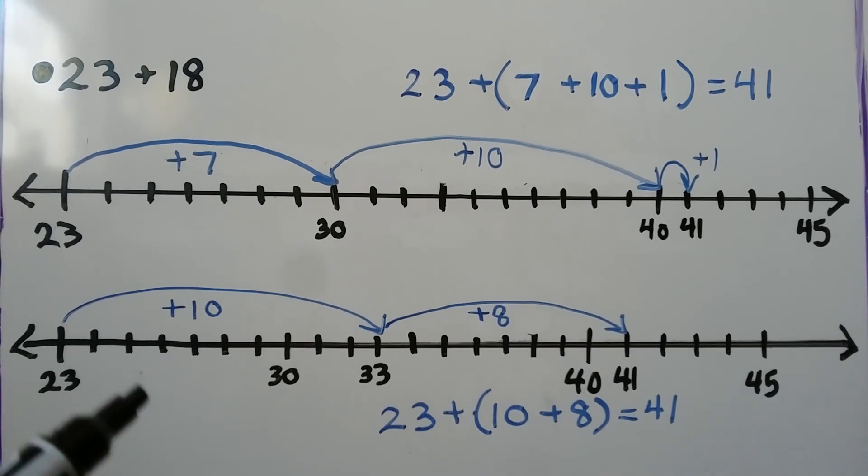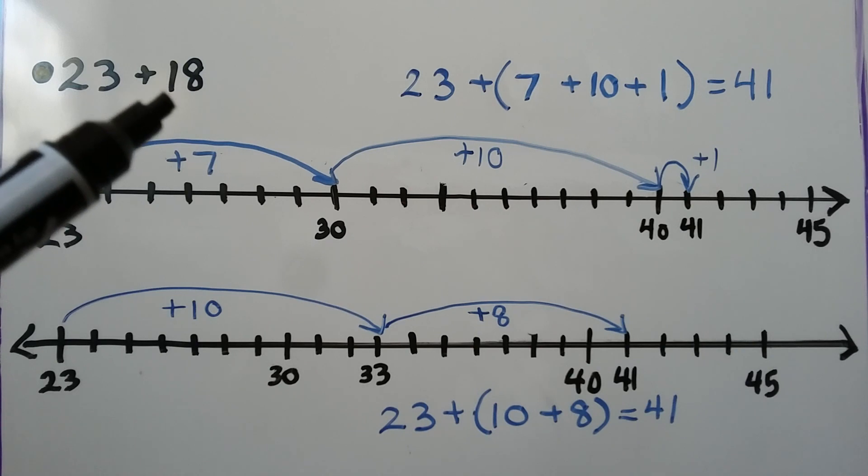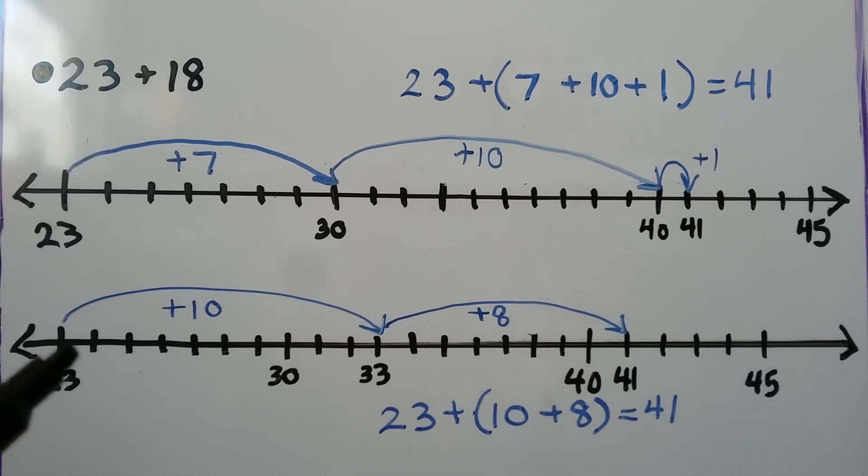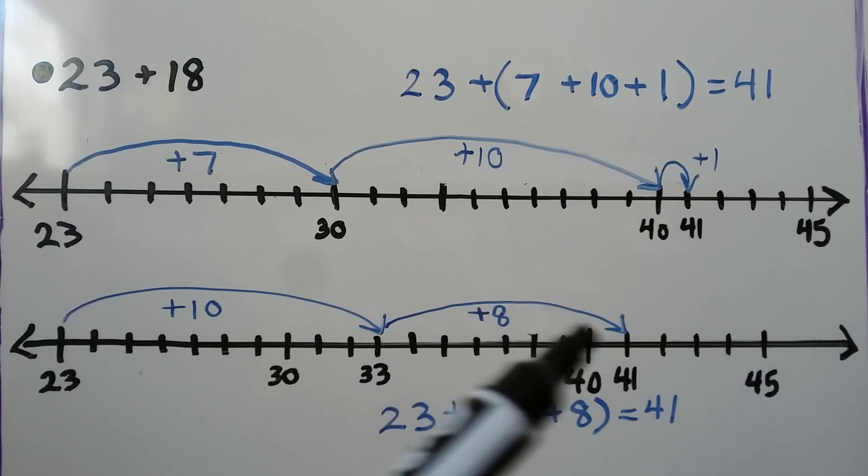We can also do it this way, which I actually think is easier. We need to add 18, so we add this 1 ten and go from 23 to 33, and then we add 8 more, which gets us to 41. Either way, we can try doing it in our head.